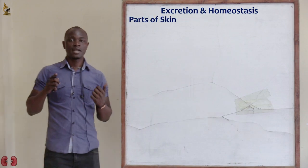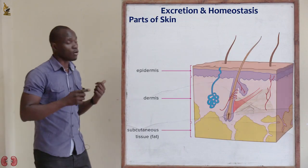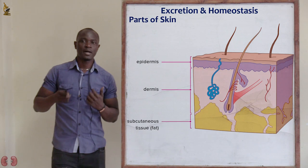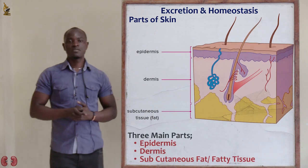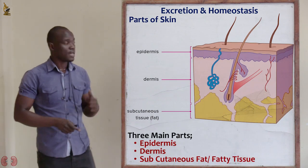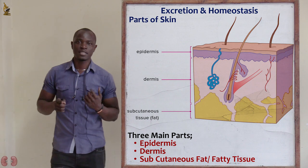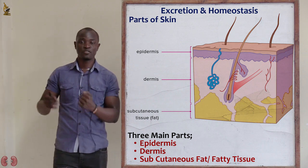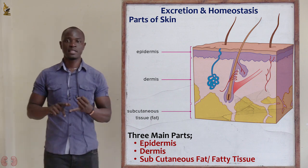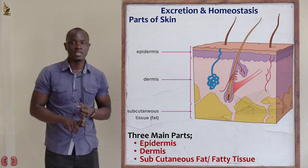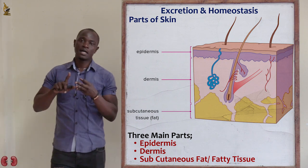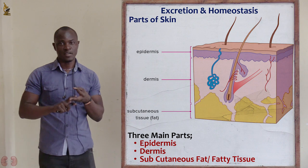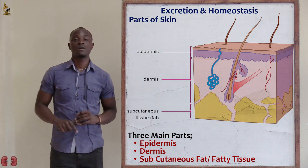Now let's look at the parts of the skin. The skin is mainly made up of three parts: the epidermis, the dermis as the middle part, and finally the subcutaneous fat layer. These are the three main parts of the skin.